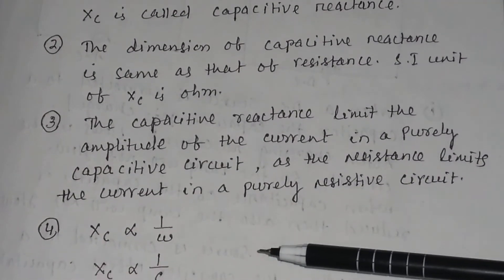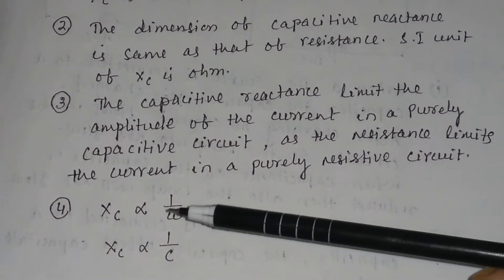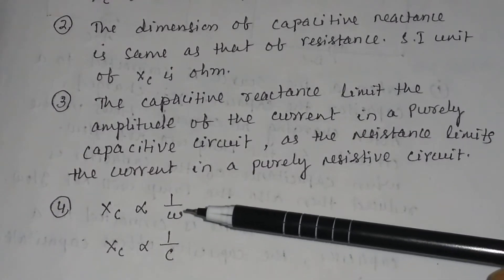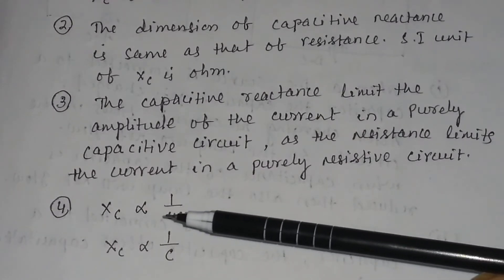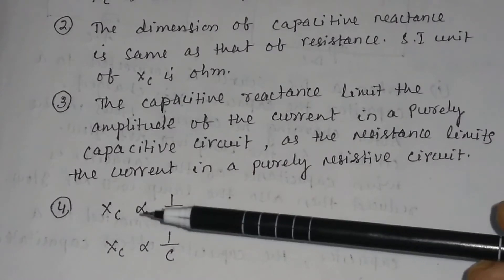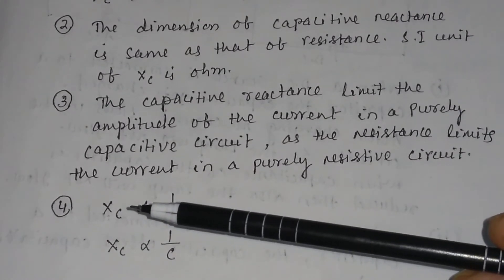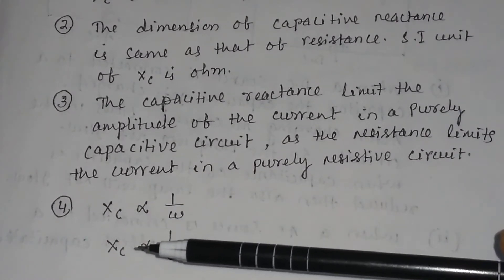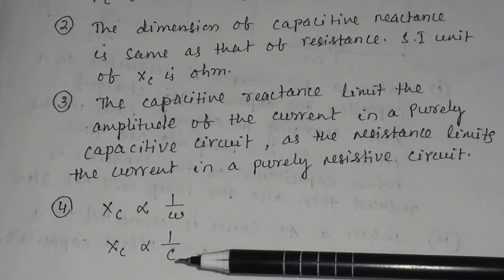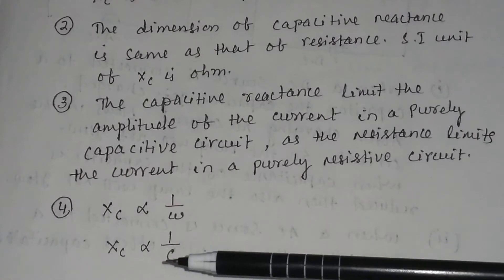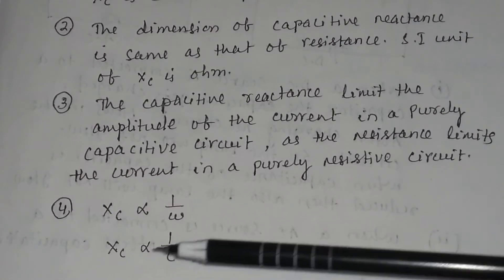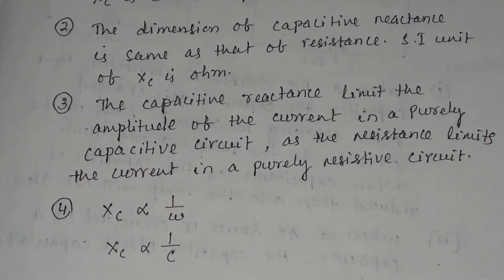From the expression, the capacitive reactance Xc is proportional to 1/ω. That is, if the angular frequency increases, the capacitive reactance will decrease. Similarly, Xc is proportional to 1/C — if the capacitance of the capacitor increases, then Xc or capacitive reactance will decrease, and vice versa.